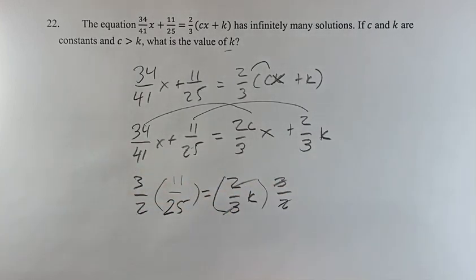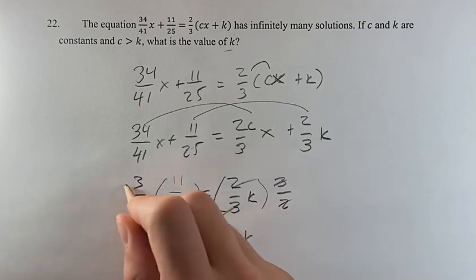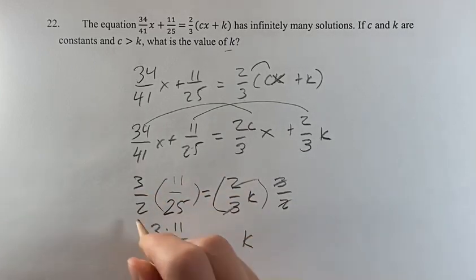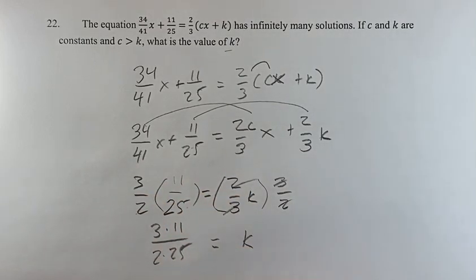And then this is going to be our value of k. k is equal to three times 11 over two times 25, which comes out to 33 over 50.